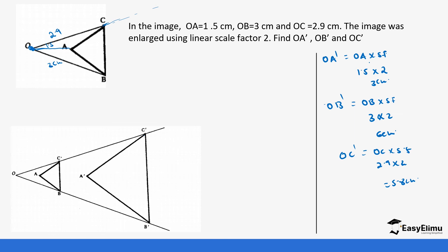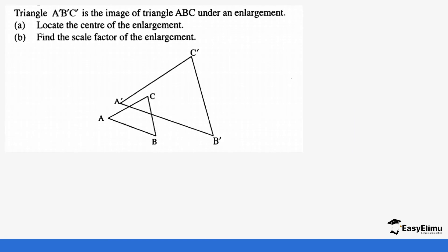Another question type is where you are given both the object and the image and told to locate the center of enlargement and find the scale factor. In this case, you draw lines joining A to A', B to B', and C to C'. Wherever these lines meet, that is the center of enlargement O. For example, a line from A' to A, a line from B' to B, and a line from C' to C will all meet at the same point — that is our center of enlargement.